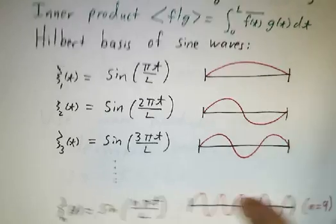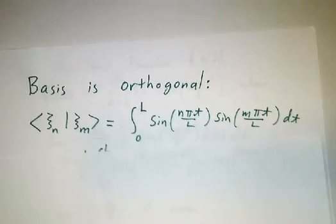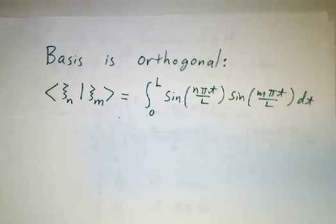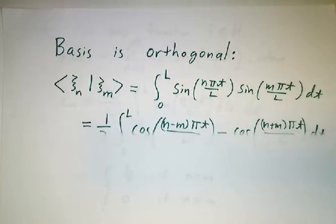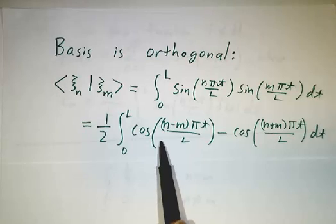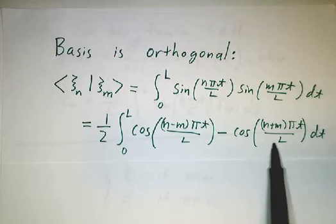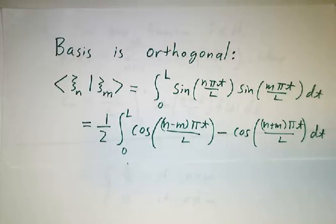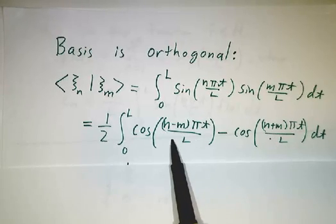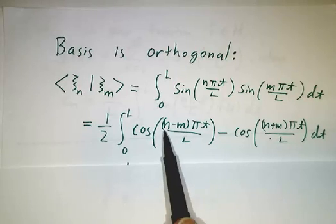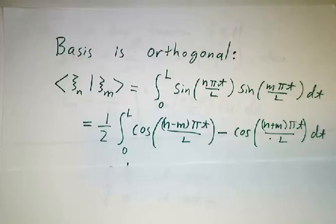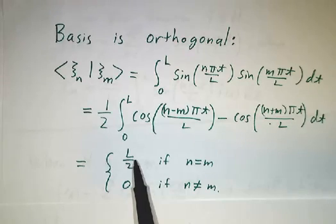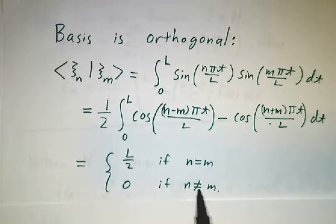The lovely thing about these vectors is that they're orthogonal. If you take the inner product of any two of them, you have to compute the integral from 0 to L of sin(nπt/L) times sin(mπt/L) dt. Using addition-of-angle formulas, the product of sine times sine can be written as a difference of cosines. One term always integrates to 0; the other integrates to 0 if n ≠ m, but if n = m, we get cos(0) = 1, and integrating 1 from 0 to L gives L. So the inner product is L/2 if n = m and 0 otherwise — they're all orthogonal and all have the same size.